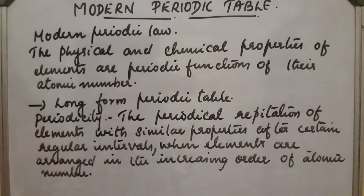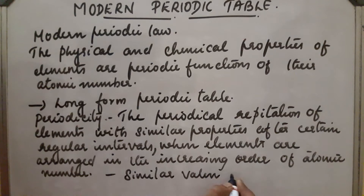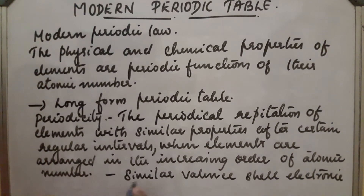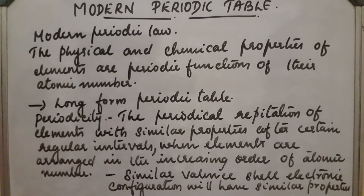Atoms having similar properties will have the same valence shell electronic configuration. Similar valence shell electronic configuration will result in similar properties. So elements with similar properties will repeat after regular intervals, and they are arranged according to their increasing order of atomic number.